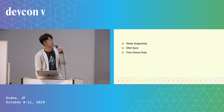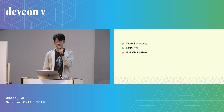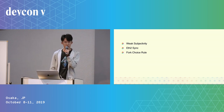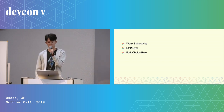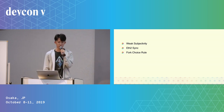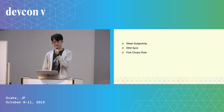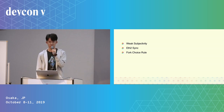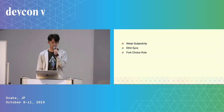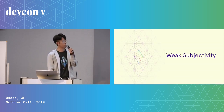This talk consists of three parts: weak subjectivity and ETH2 sync, and finally I'll make a brief introduction on the fork-choice rule used in ETH2.